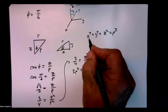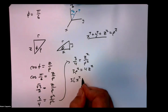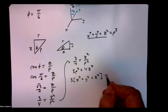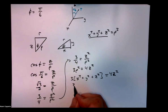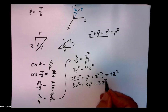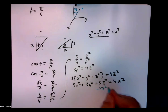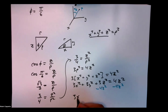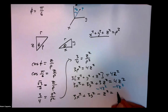But rho squared is x squared plus y squared plus z squared. So we get 3 times (x squared plus y squared plus z squared) equals 4 z squared. Distributing, we get 3x squared plus 3y squared plus 3z squared equals 4z squared. Subtracting 4z squared from both sides, we finish with 3x squared plus 3y squared minus z squared equals 0.